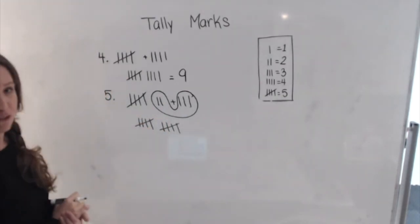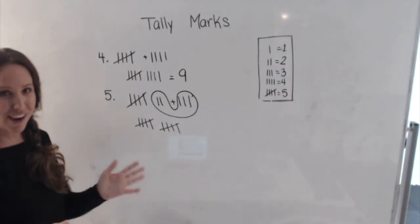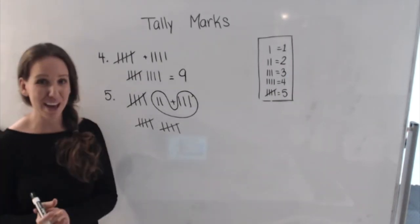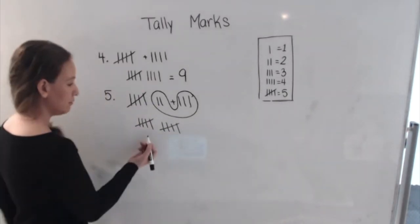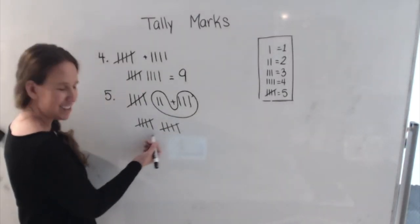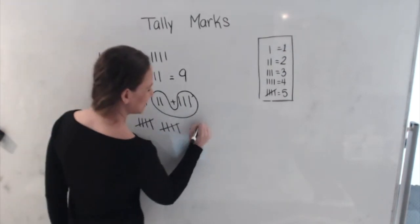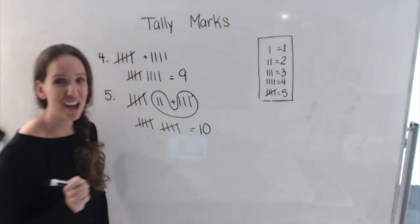Were any tally marks left over? Yeah. None of them are by themselves. So all we have to do now is count by fives and see how many groups we have. So we have two groups. So we go five, five, ten. That's right guys. You did such an awesome job today.